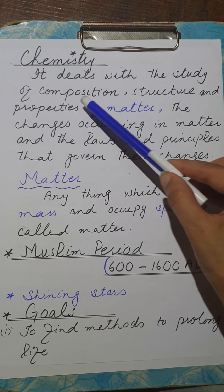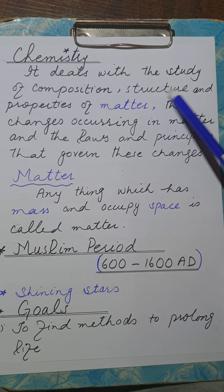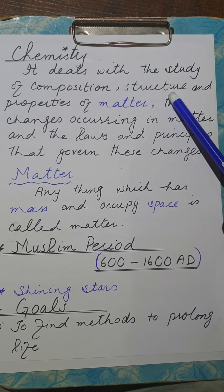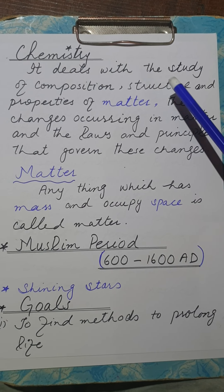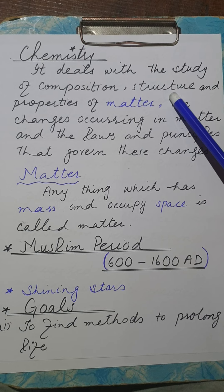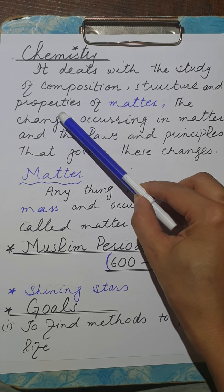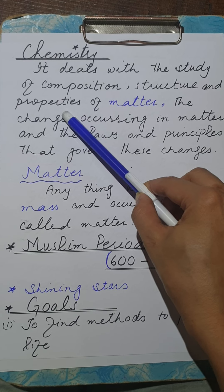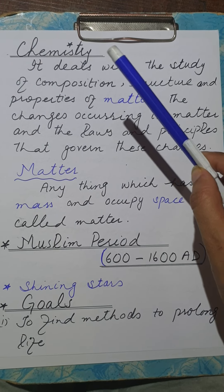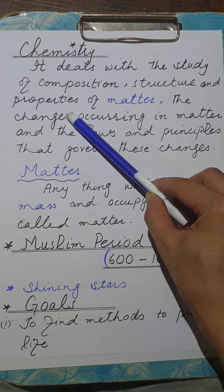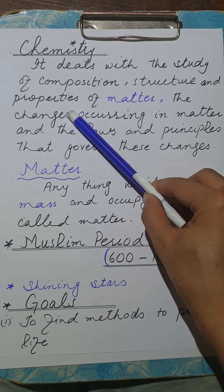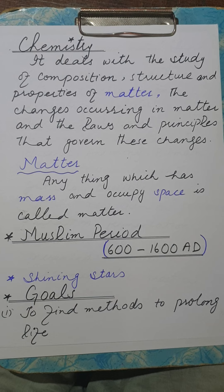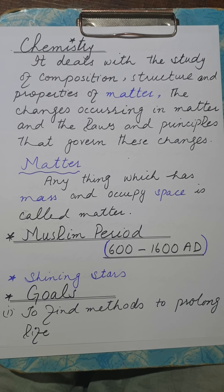Chemistry is the branch of science which deals with the study of composition, structure, and properties of matter. Structure means the arrangement of matter. The third most important thing we discuss in chemistry is the properties of matter. We have two types of properties: physical properties and chemical properties. Physical properties are those properties which we can observe with the help of our five senses.